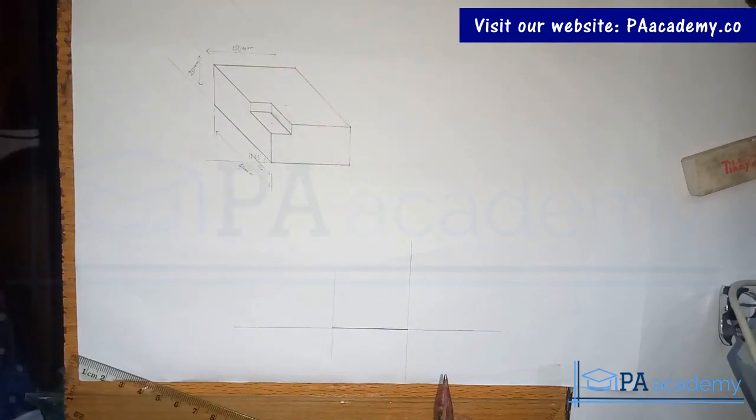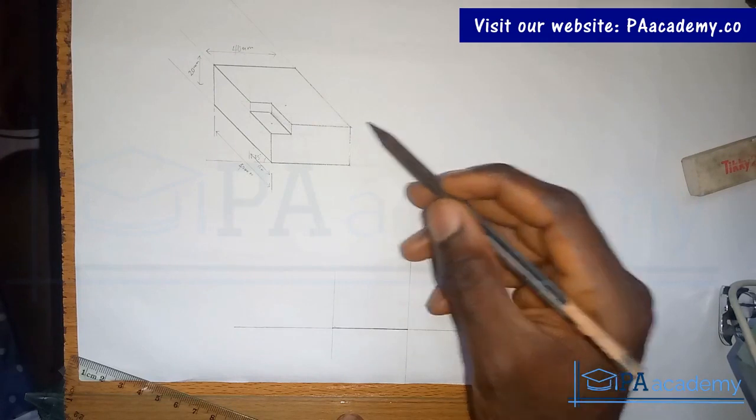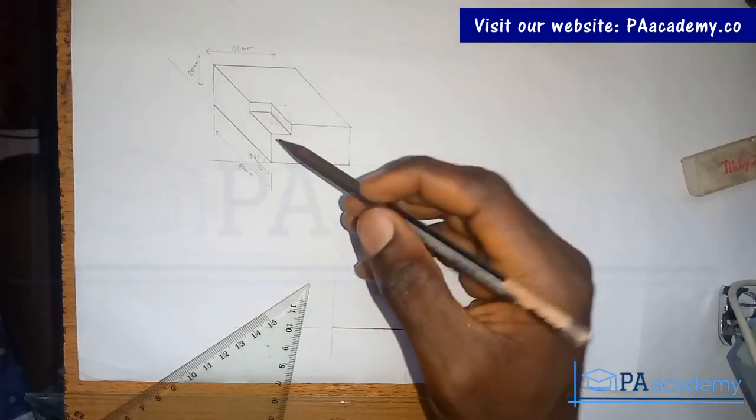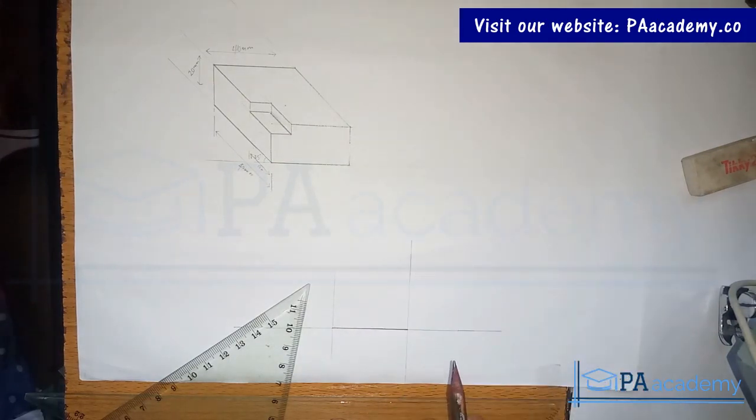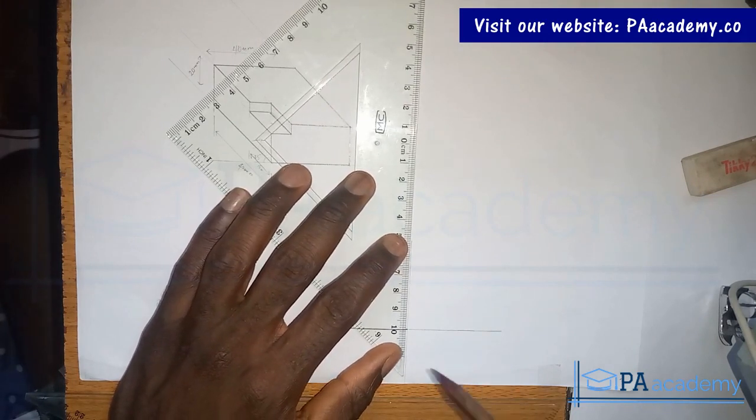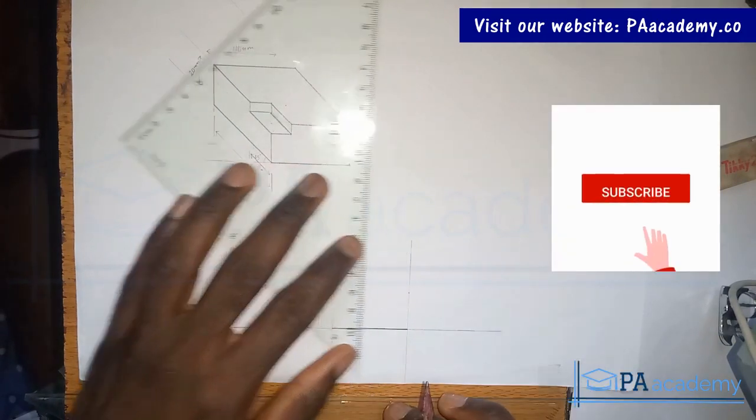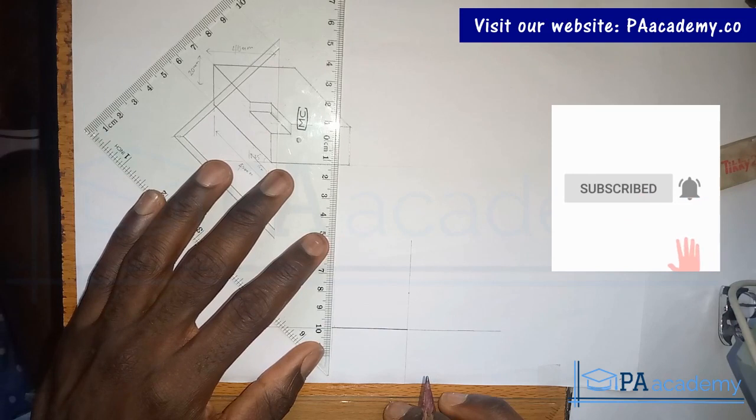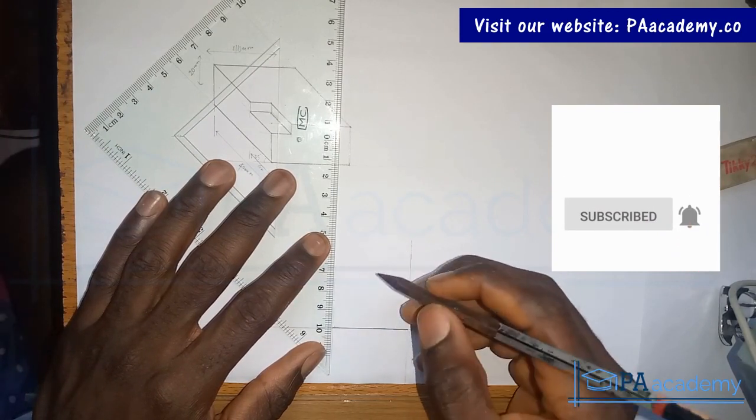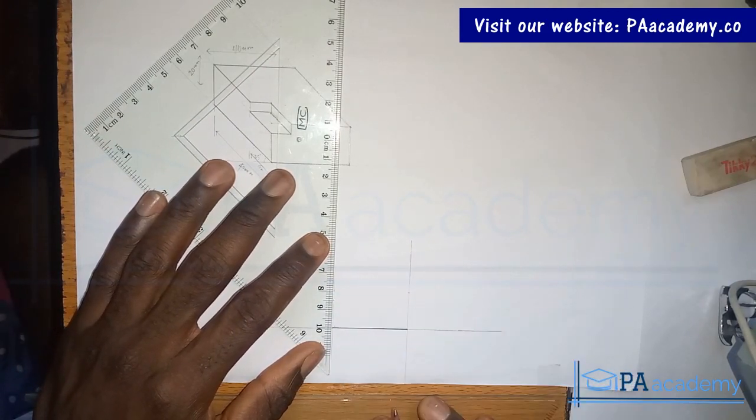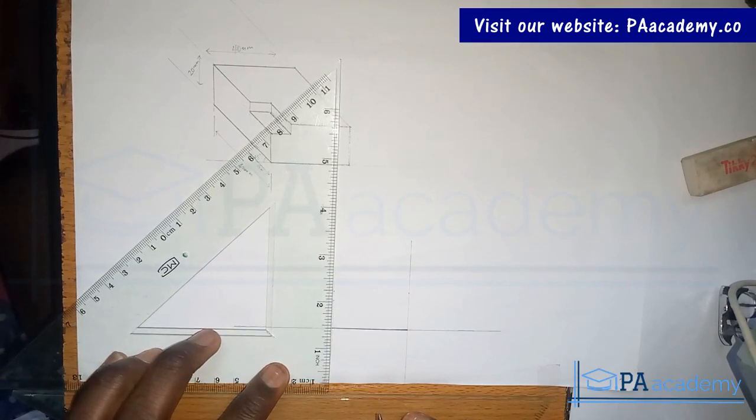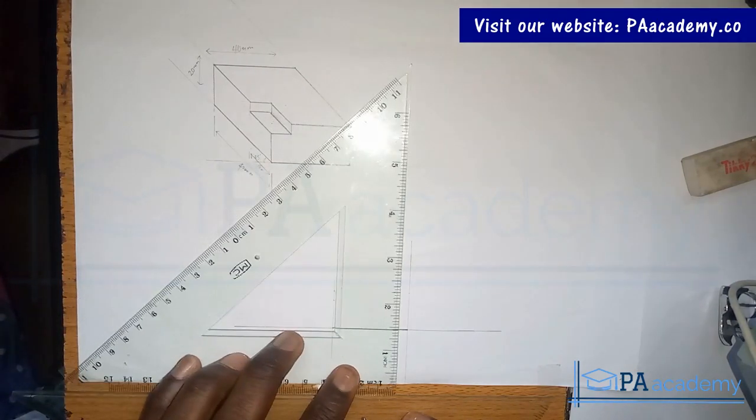The length from here to here is 20mm, which is 2 centimeters. The length from here to here is 15mm, which is 1.5 centimeters. Let me mark those measurements. Having done that, just make sure that all the lines are parallel where necessary.